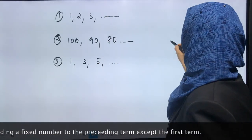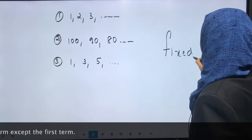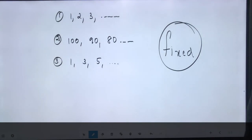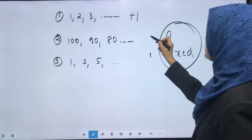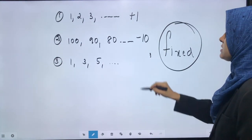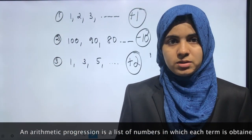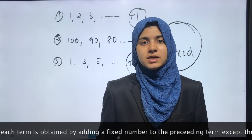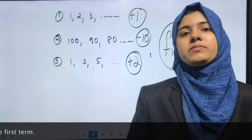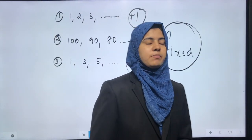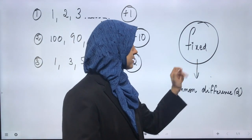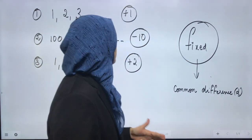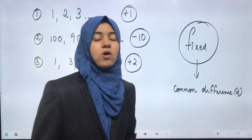We are adding a fixed number each time. In example 1, the fixed number is plus 1; in example 3, it is minus 10; and in example 4, it is plus 2. So an arithmetic progression is a list of numbers where each term, except the first, is obtained by adding a fixed number to the preceding term. This fixed number is called the common difference of the AP.